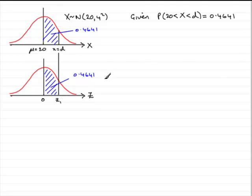And the tables give us the area to the left of any z value. So in other words, what we know is that the probability that x is less than d is going to be given or represented by the area to the left of d.